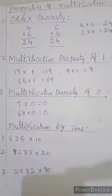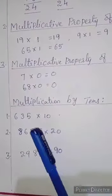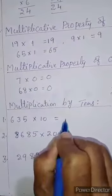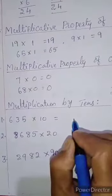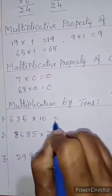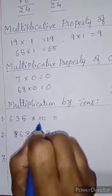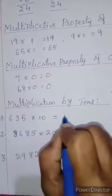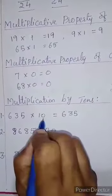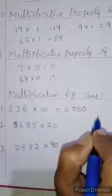Now the next heading: multiplication by 10s. When a number is multiplied by 10, you will add a 0 at the right of the number. Let us see — 635 multiplied by 10. You will write 635 into 1, multiply 635 by 1 to get 635, then add a 0 at the right side of this number.